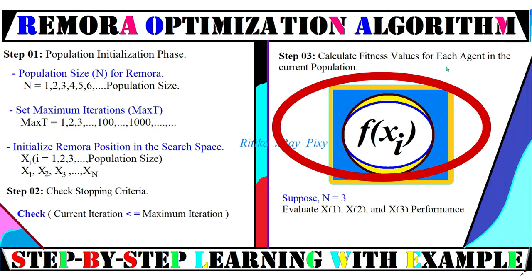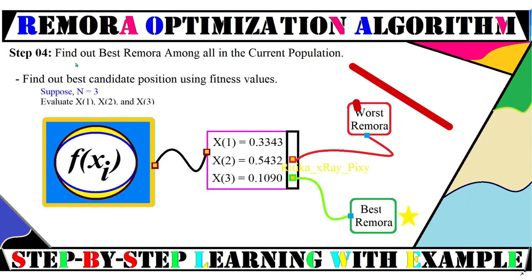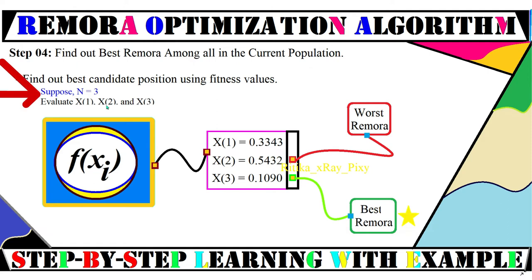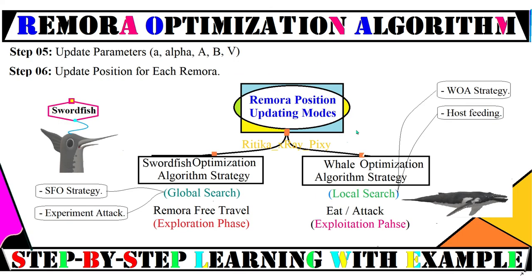If the stopping criteria is matched, stop and display the solution obtained. If not matched, we repeat the loop. In step three, using a fitness or objective function, we evaluate the performance for each remora in the search space. In step four, we find the best among all candidates in the current population. For example, with three remora, we apply an objective function and obtain fitness values — the minimum value is considered the best candidate and the maximum is the worst.